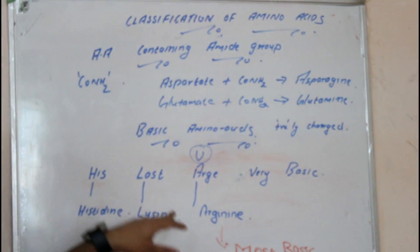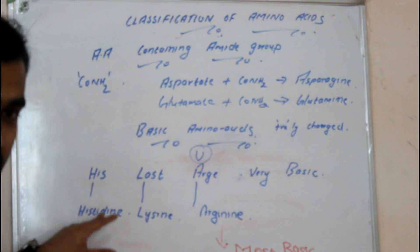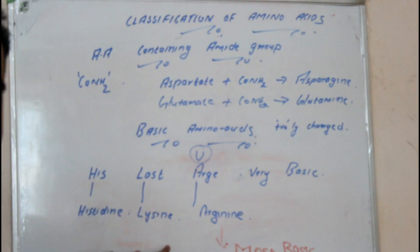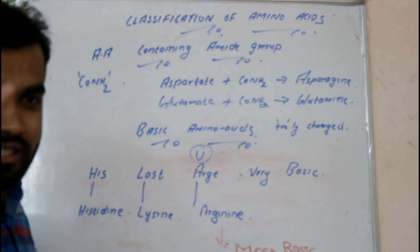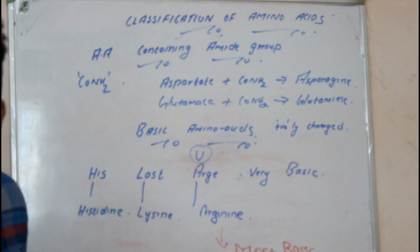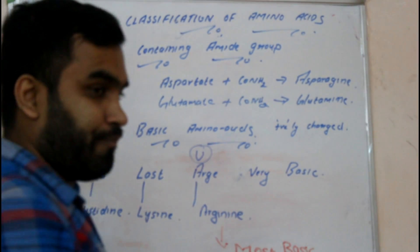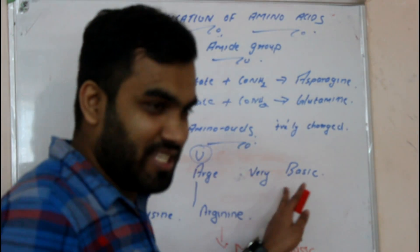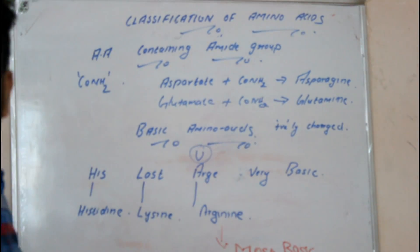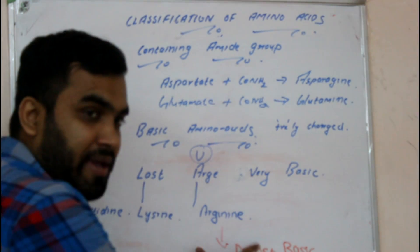To summarize, among basic amino acids, arginine is the most basic one — this is really important. Arginine is the most basic among histidine, lysine, and arginine.